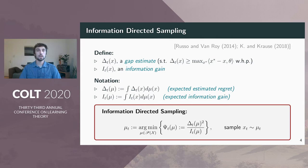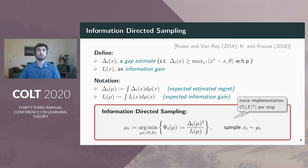At time t, IDS samples the action from a distribution mu_t, which minimizes the so-called information ratio, which is the expected estimated regret squared divided by the expected information gain. There is a result which says that the IDS distribution can always be supported on two actions. For finite action sets, that means a naive implementation scales quadratically with the number of actions, but this can be improved to linear in some cases.